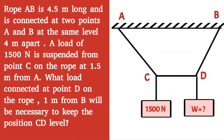Given question: rope AB is 4.5 meters long and is connected at two points A and B at the same level, 4 meters apart. A load of 1500 N is suspended from point C on the rope, 1.5 meters from A. What load connected at point D on the rope, 1 meter from B, will be necessary to keep the section CD level?